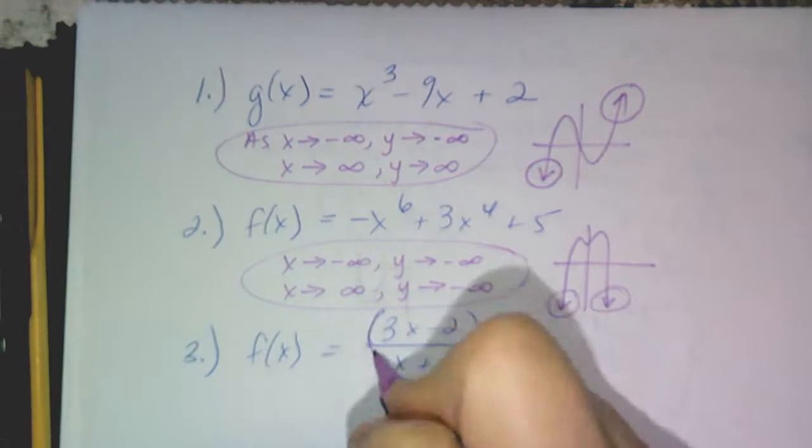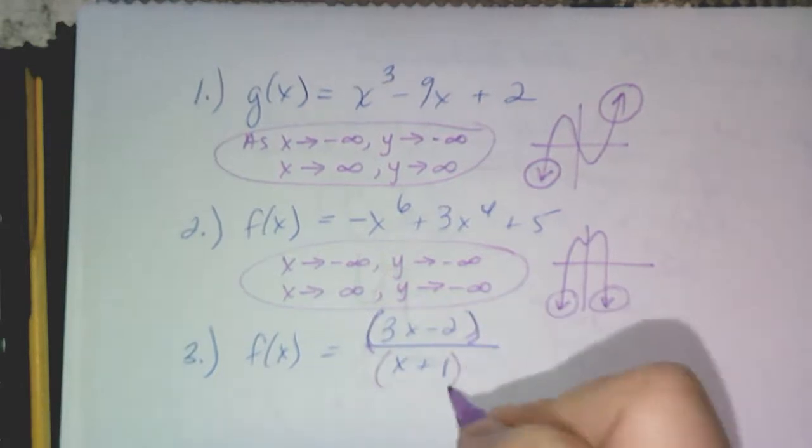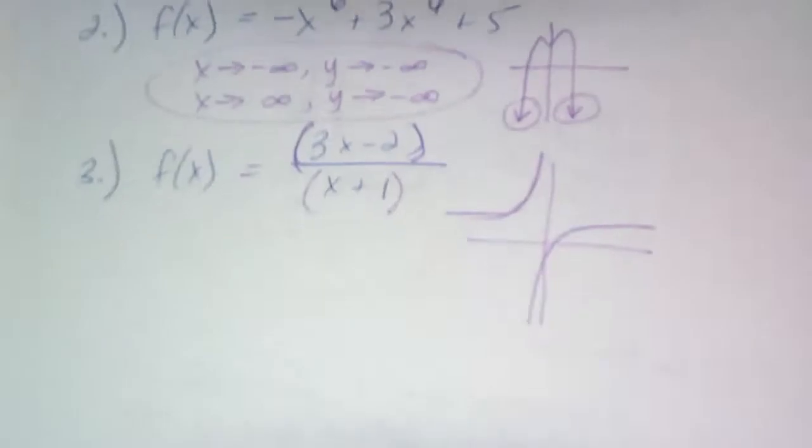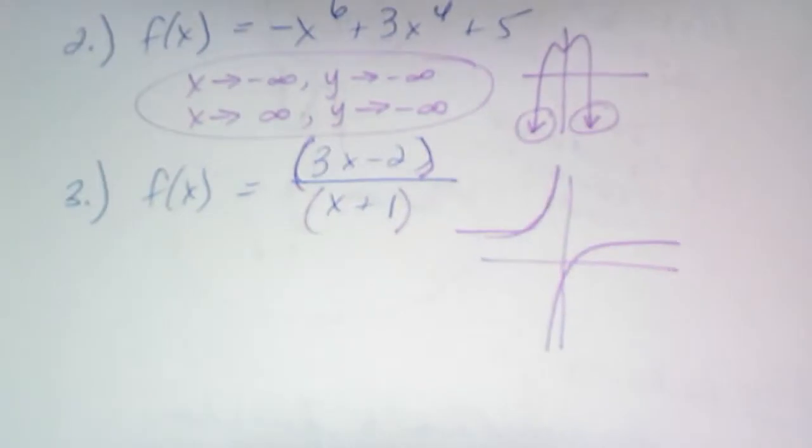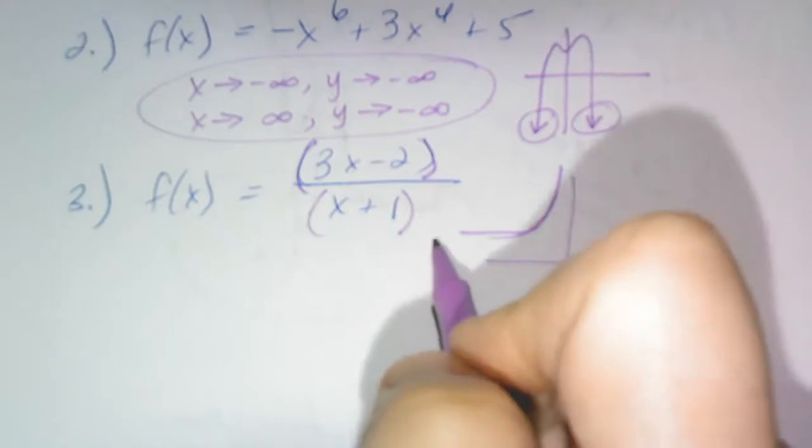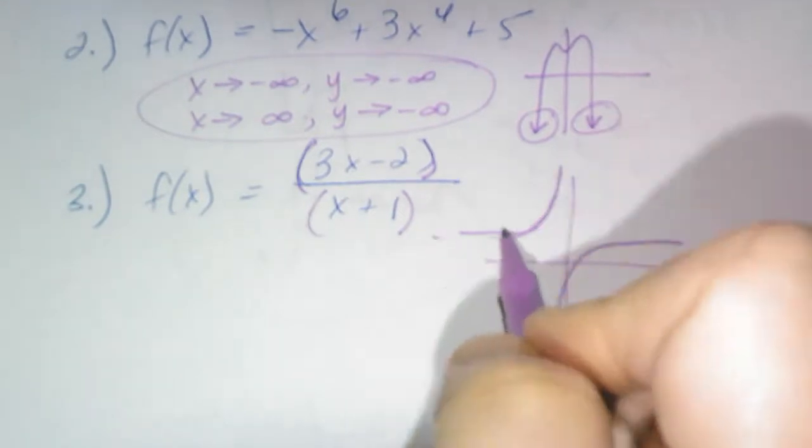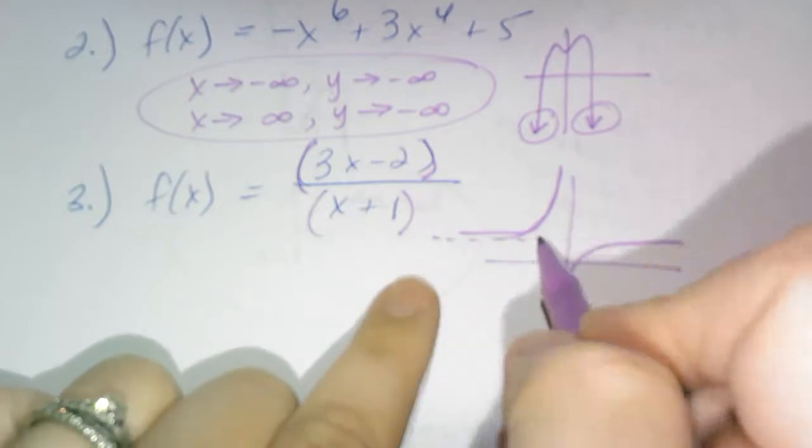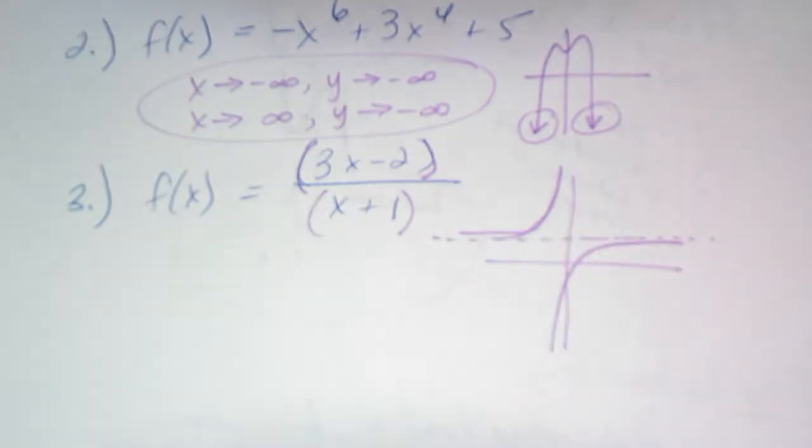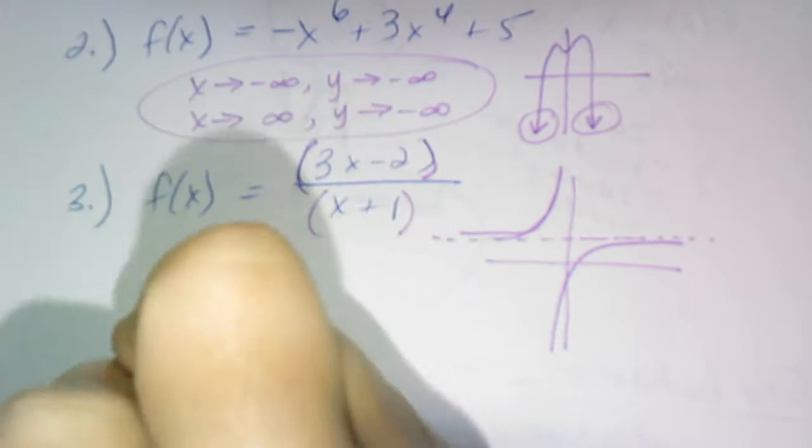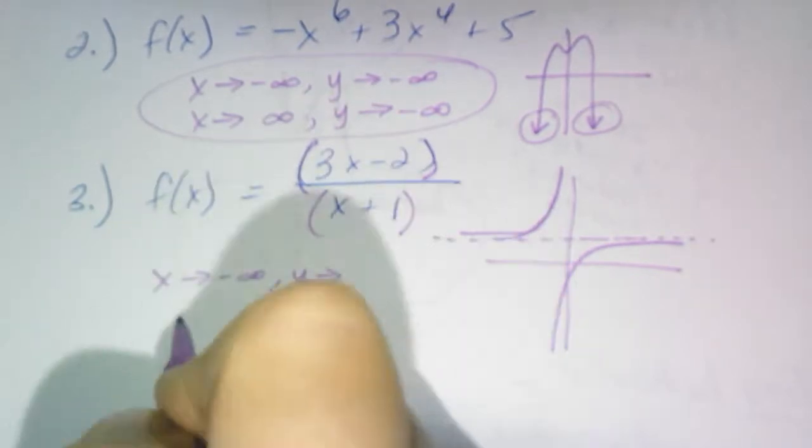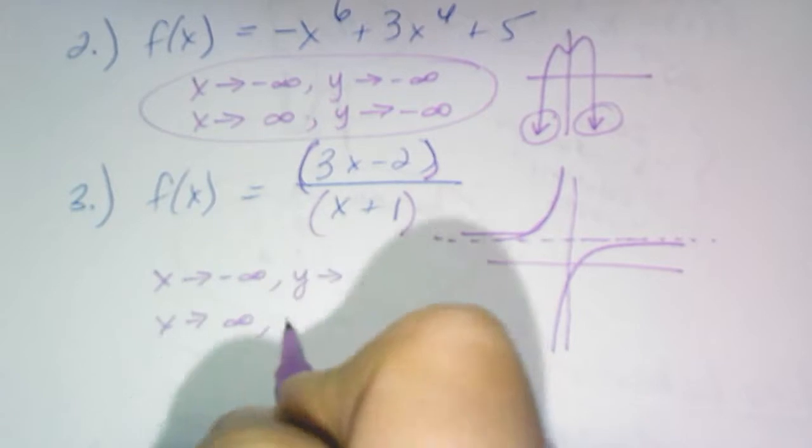All right. But we got one more to talk about, this fraction one. Please, again, make sure you put parentheses when you type this in. Because there's something, and I know you've heard of this before. There's this, it looks like it's leveling off right here and right here, correct? This is called an asymptote.